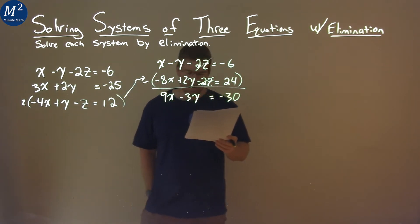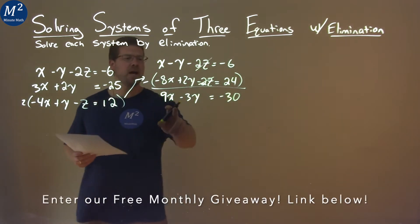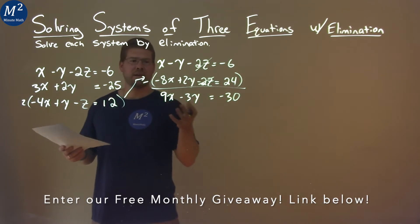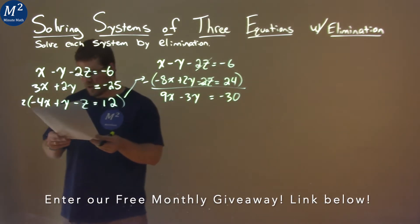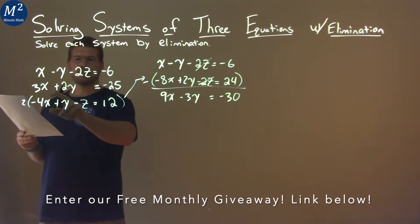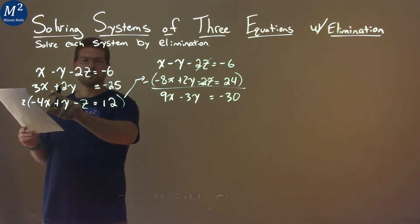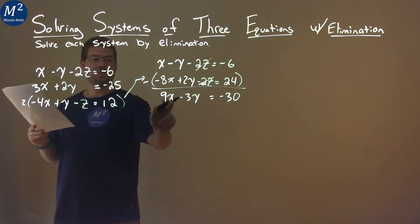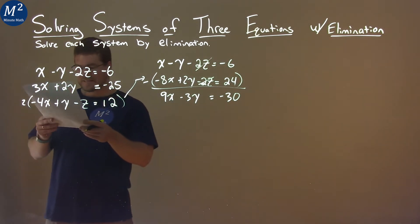So now I have 9x minus 3y equals negative 30, and I want to try to eliminate another variable. If I take this second equation here and multiply it by 3, I would have a 9x, which I have here. So let's do that.